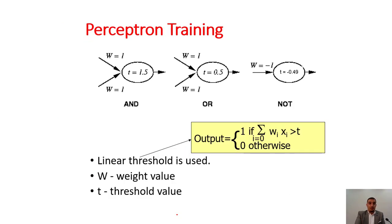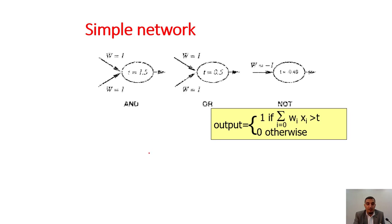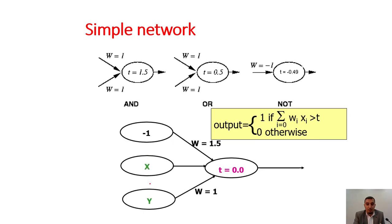Perceptron training for the AND gate: w equals 1, w equals 1, t equals 1.5. For the OR gate it's 0.5, and for the NOT gate it's minus 0.49 with a weight of minus 1. The linear threshold was used, and the weight values were given to produce our simple output network.